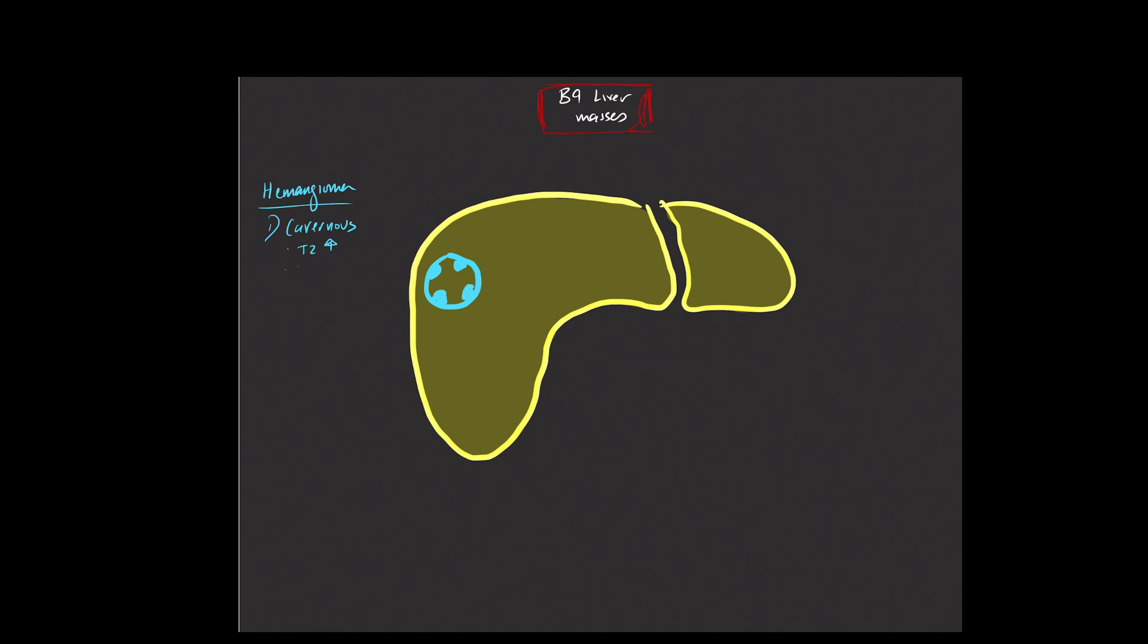When you give contrast, there's going to be this peripheral discontinuous nodular enhancement. It's going to look like little puddles of enhancement along the periphery of the lesion. And when you image on the different phases, that nodular enhancing component will fill in in a centripetal fashion.